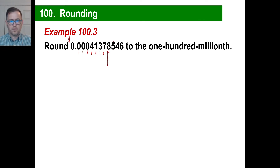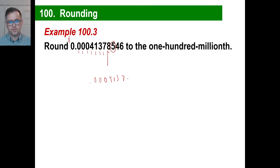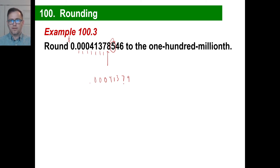Okay, that digit is 5 or greater. So we're writing this entire thing over: 0, 0, 0, 4, 1, 3, 7 — and then not 8, we're going to round that up because it is 5 or greater on the other side. So the answer is 0.00041379, which is 41,379 hundred-thousandths. That's lots of essential oils.